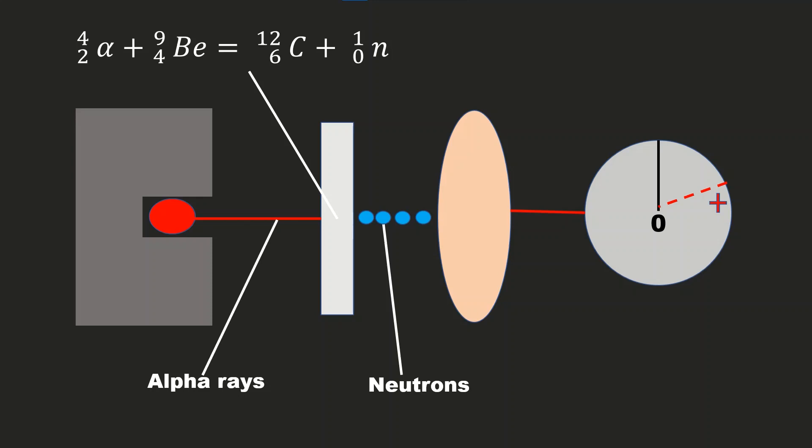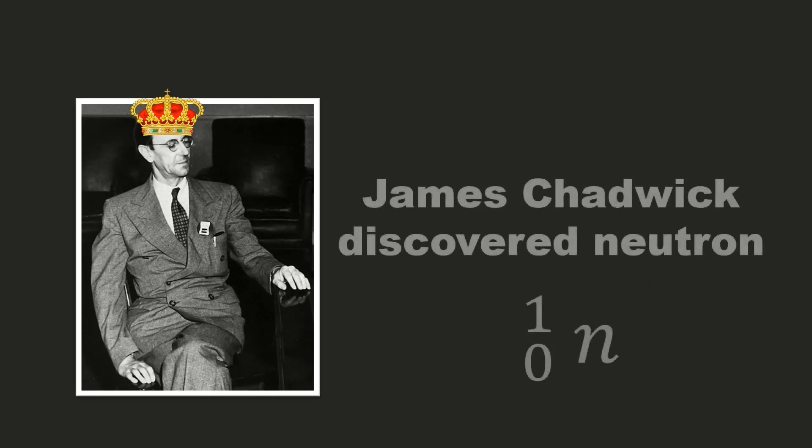When these neutrons hit the paraffin wax, it breaks the CH bonds in it and emit H+. This is why there is a deflection in the Geiger counter. So Chadwick was honored as the scientist who discovered neutrons.